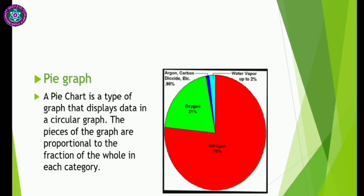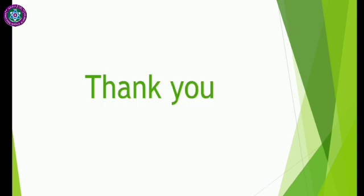The next one is the pie graph. A pie chart is a type of graph that displays data in a circular graph. The pieces of the graph are proportional to the fraction of the whole in each category. It is divided into angular sections, each representing a specific quantity. Pie graphs are used when total data is divided into percentage segments. For example, the atmospheric composition pie graph shows nitrogen at 78%, oxygen at 21%, and carbon dioxide and other gases in very small portions, with water vapors up to 2%.